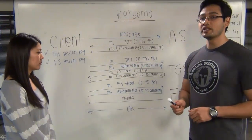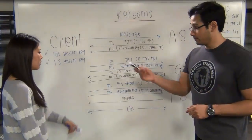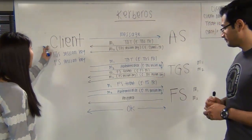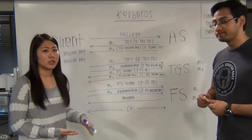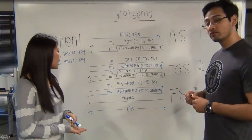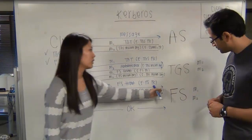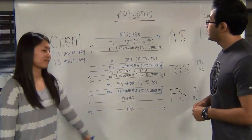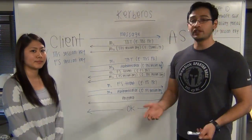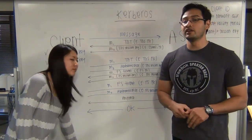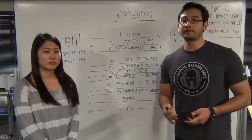If everything checks out, the file server will send a response back to the client. The client will then check the timestamp to see if it's correct, and if all is good, the client can now get service from the file server. And that's exactly how Kerberos works. Hopefully you understand — check out our instructor notes and references. Thank you.